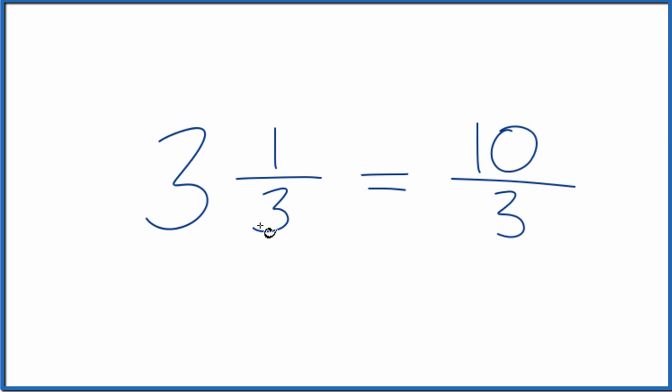3 times 3 is 9, plus 1. That's the 10. Then we just bring the denominator across.